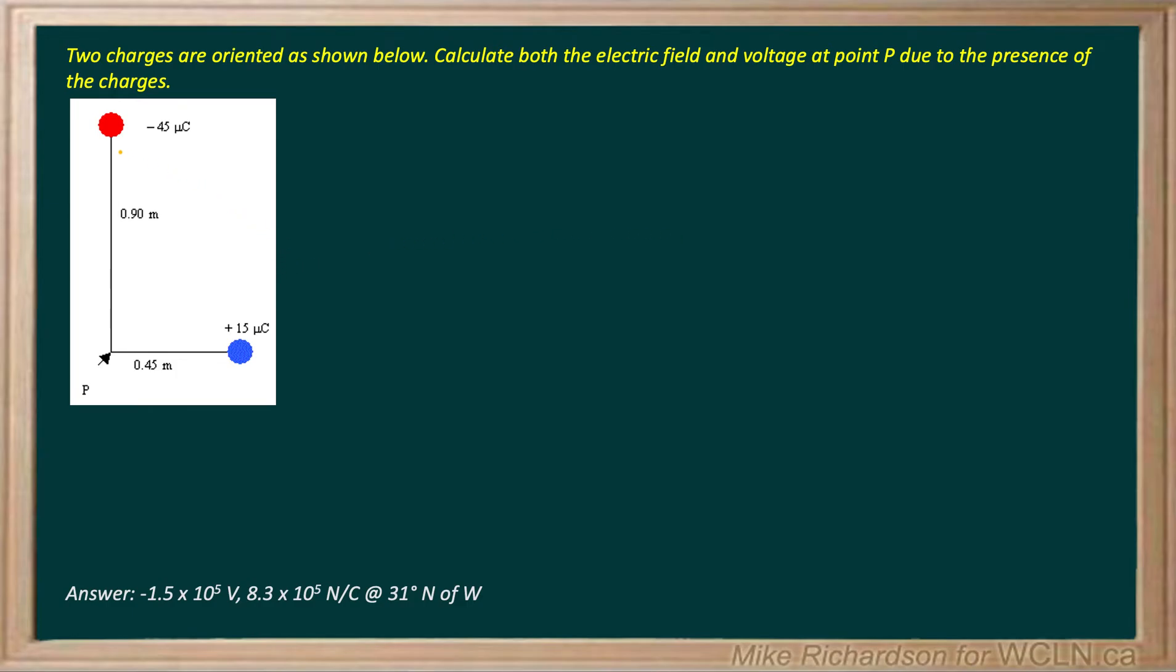Here we've got a couple of charges and you can see how they're oriented. We've got a negative 45 microcoulomb charge on the top left, the red one, and a positive blue 15 microcoulomb charge on the lower right. Now we're focusing on this point P, which I'll put a yellow dot on, and at that point we're trying to figure out what the electric field is and what the voltage is.